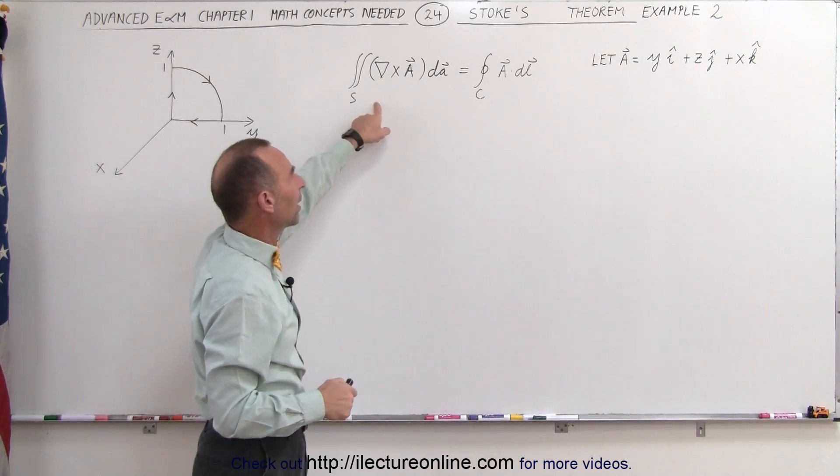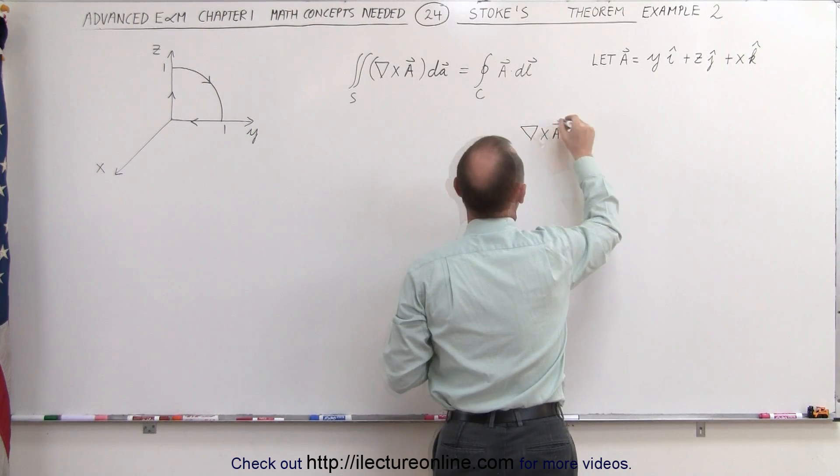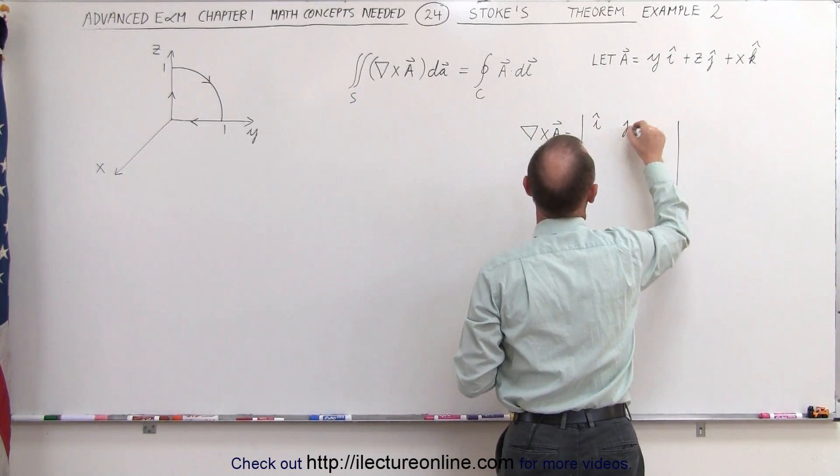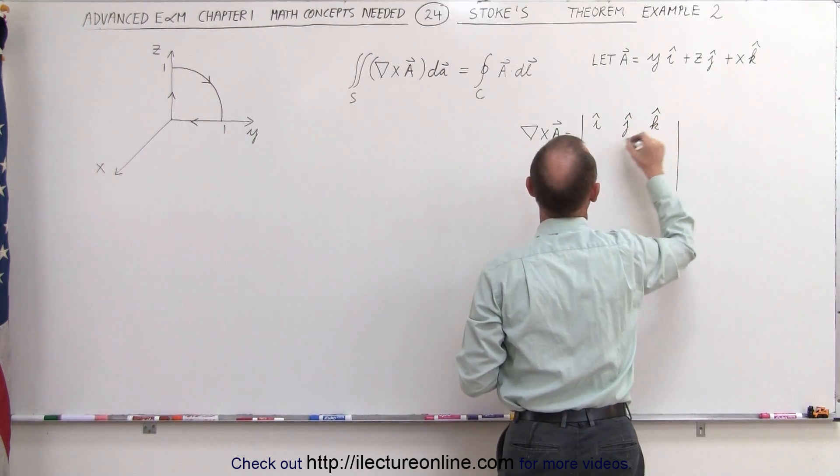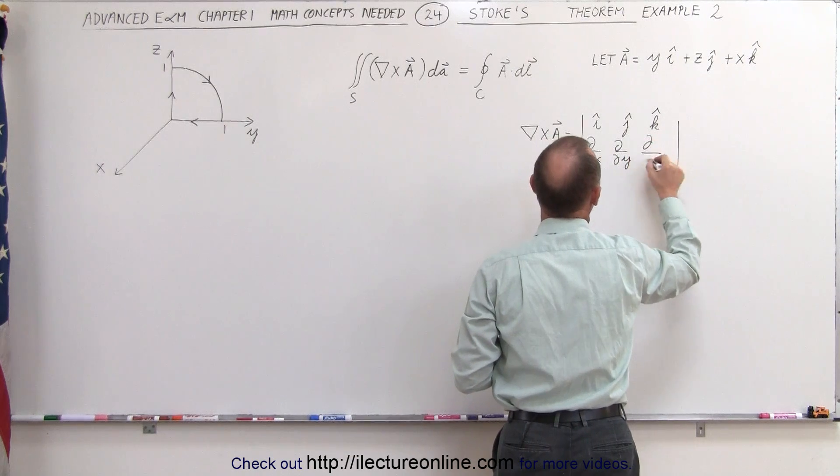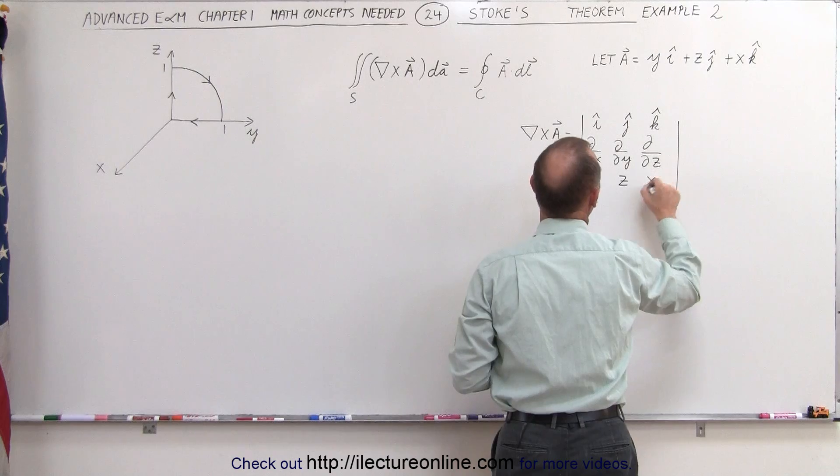Let's find the curl of A and see what we end up with. The curl of A is equal to i, j, k, the partial with respect to x, the partial with respect to y, the partial with respect to z, and then we get y, z, and x.